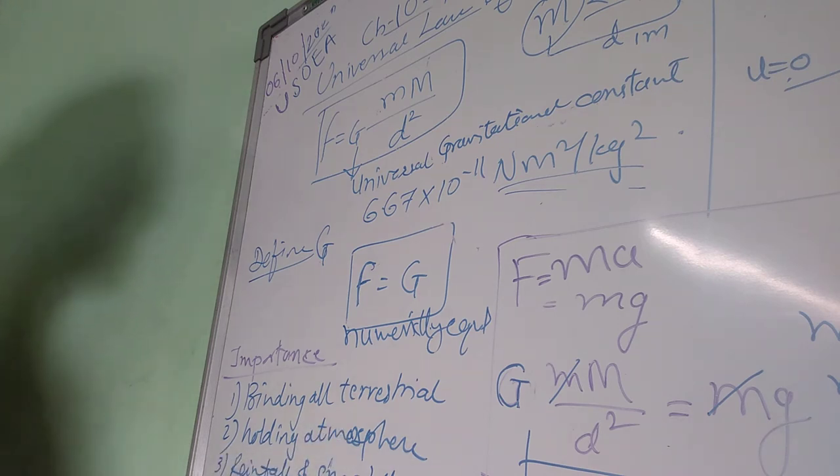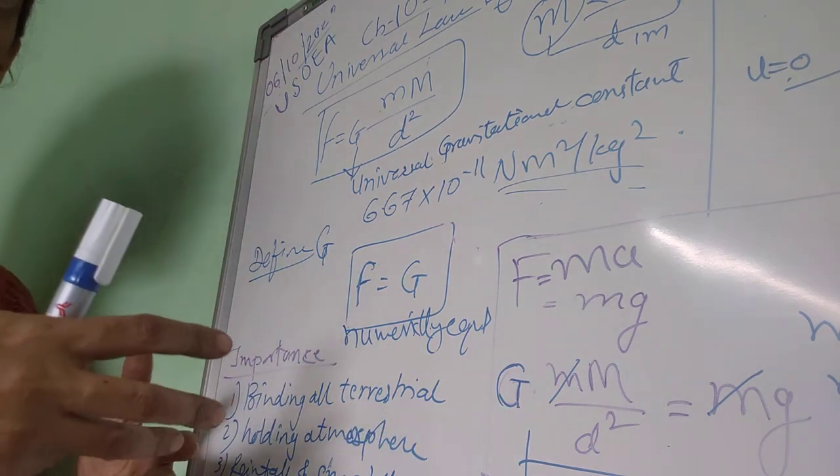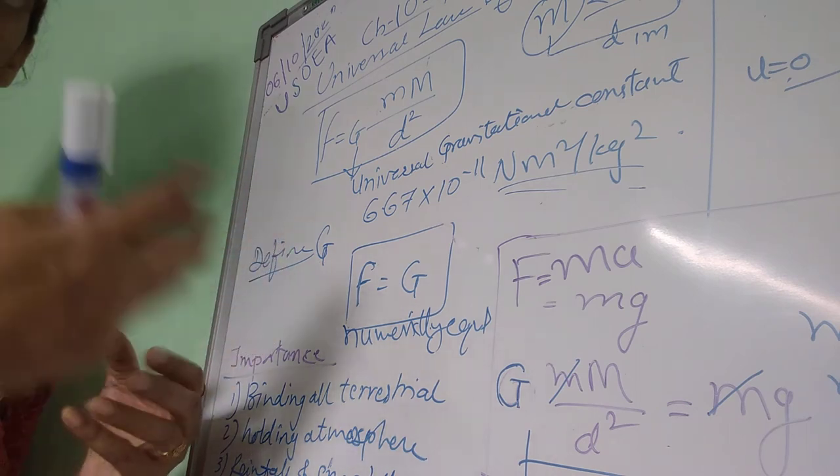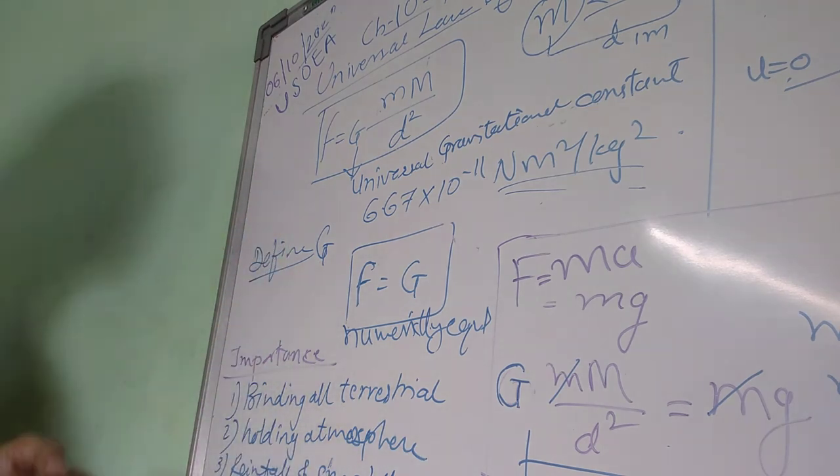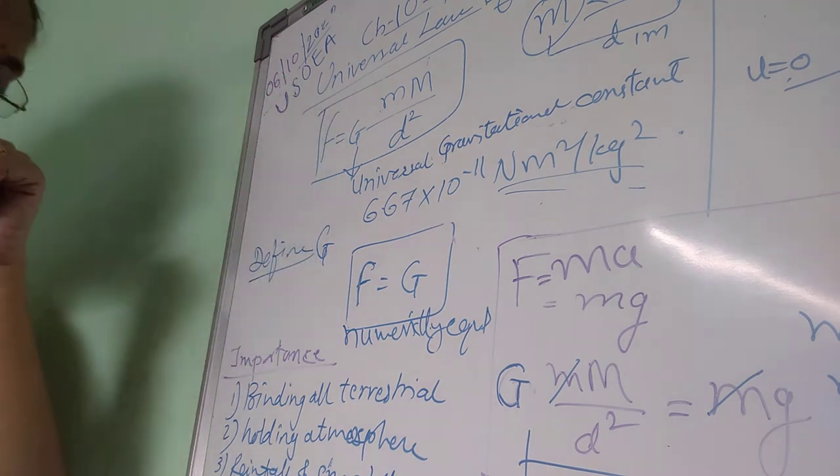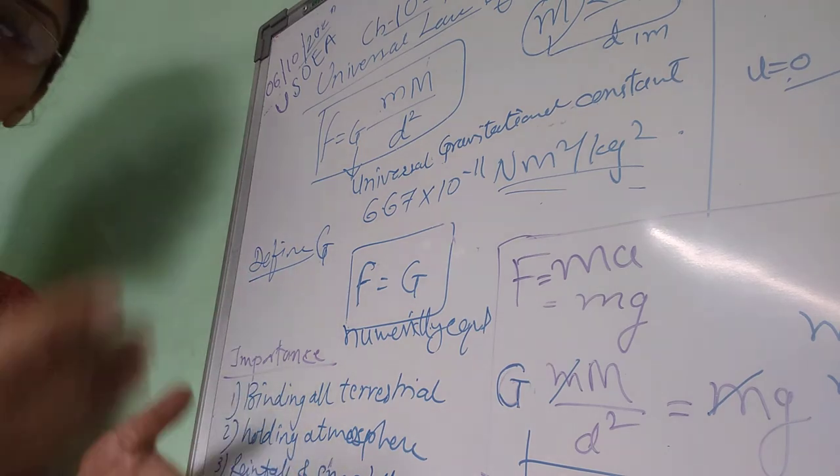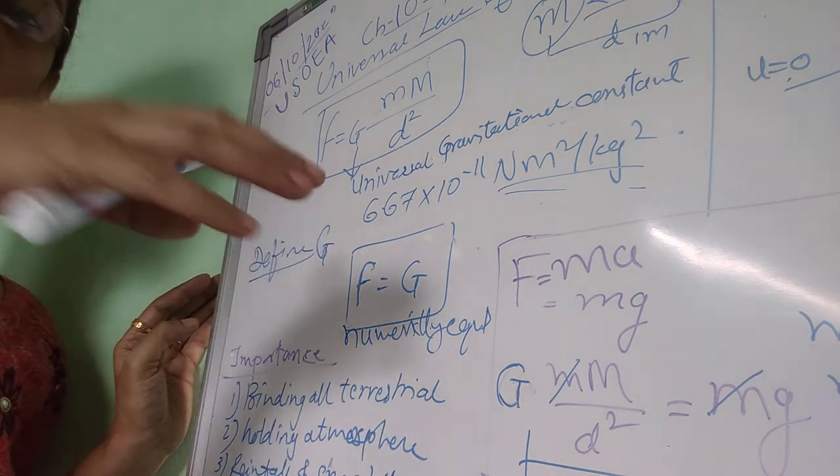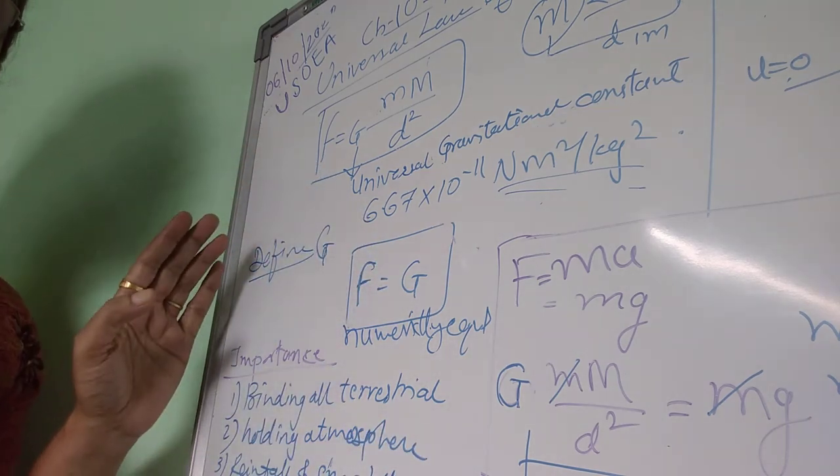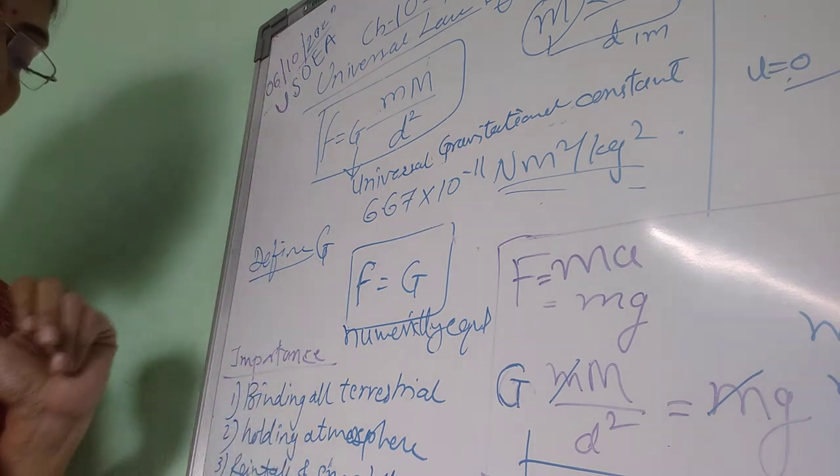Motion of the planets, motion of the moon around the earth, or motion of any other artificial satellites around the earth - that is also due to gravitation. Motion of all the planets: we know that in our solar system, the sun is the center and all the planets are revolving around it. Motion of all these are governed by this universal law of gravitation.